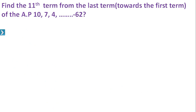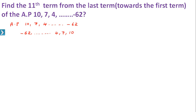Find the 11th term from the last term of the AP 10, 7, 4 up to minus 62. Finding the nth term from the last term means counting towards the first term. To do this, reverse the AP: write it as minus 62, then 4, 7, 10. Now minus 62 becomes the first term.